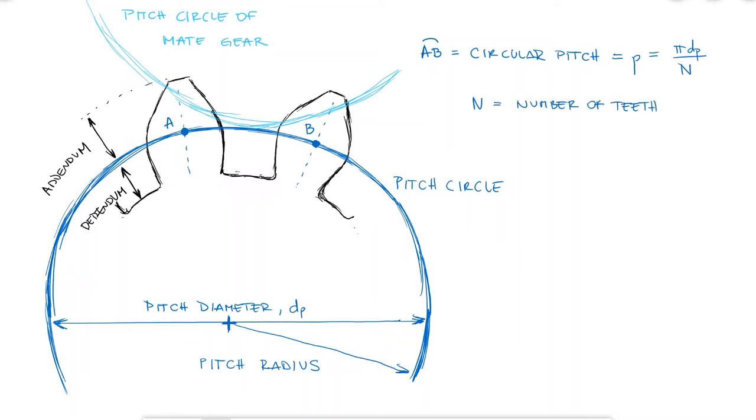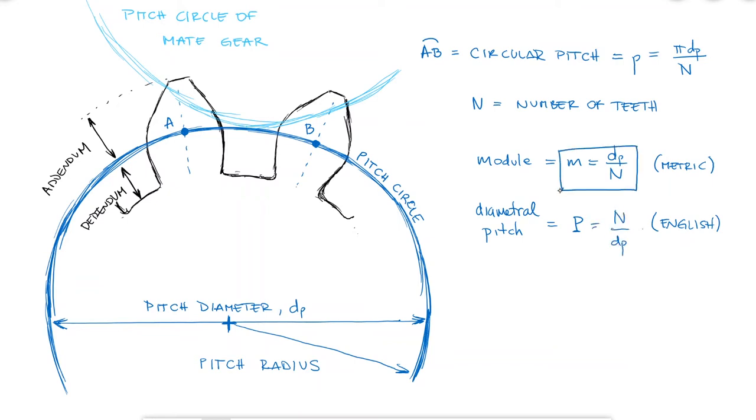Even though the circular pitch is what defines that distance, which makes total sense for a pitch, we usually use the module for metric units, which is the same as the circular pitch without the pi, and the diametral pitch for English units, which for whatever reason is the reciprocal of that. The units of the module would be millimeter per teeth, and the units of the diametral pitch are teeth per inch.